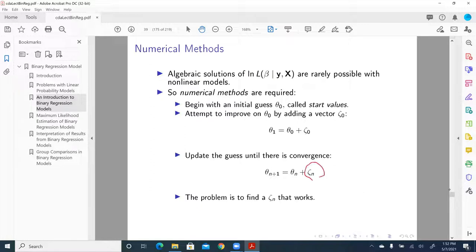It turns out zeta is a product of gradient - that is, first partial derivative of log likelihood with respect to beta - and the Hessian matrix. If we want to find a beta that maximizes the log likelihood, and thus the likelihood function, the first partial of log likelihood with respect to beta should be zero.